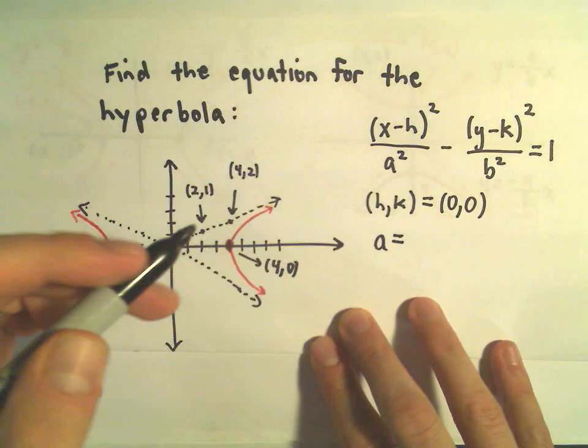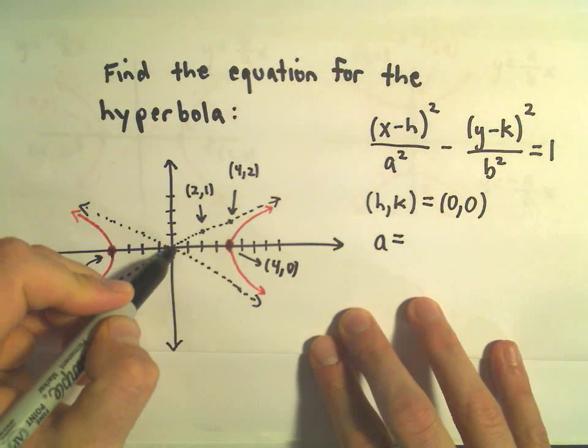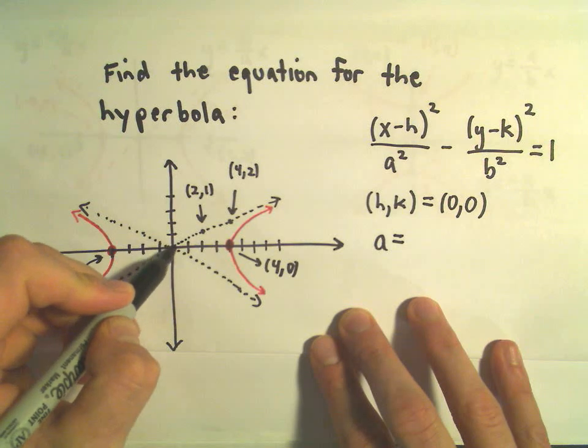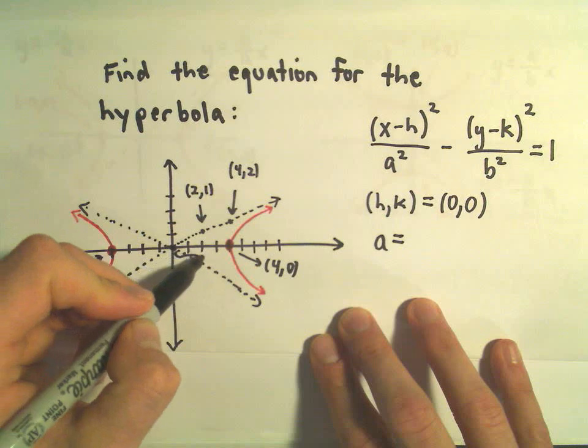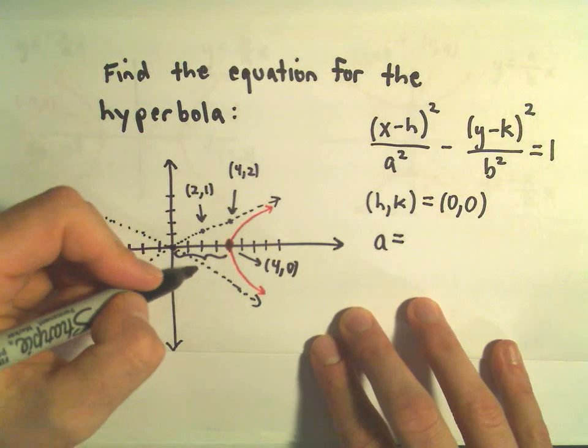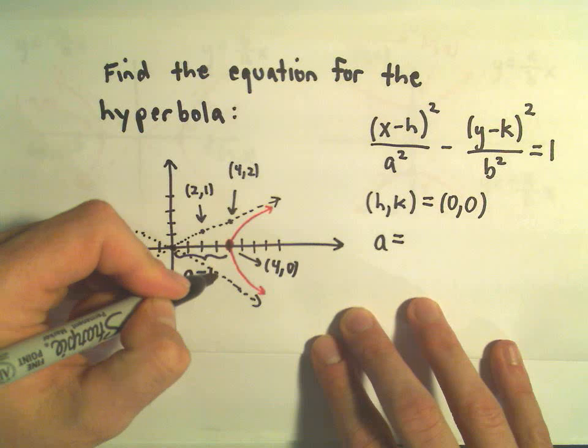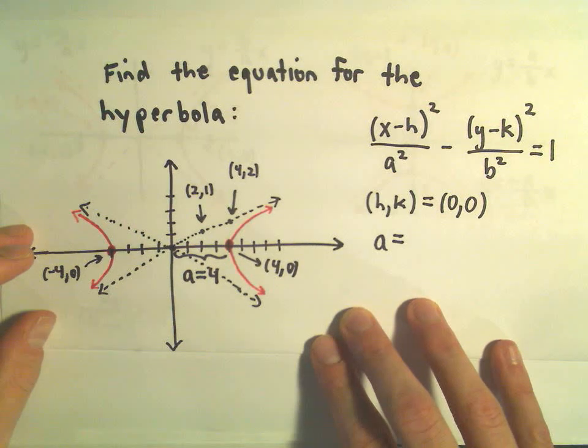Remember a, that's going to be the distance from where the asymptotes cross over to one of the vertices. So to me in this case, it looks like our a value is going to be an a value of positive 4.